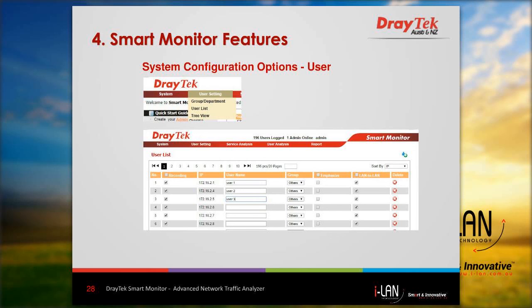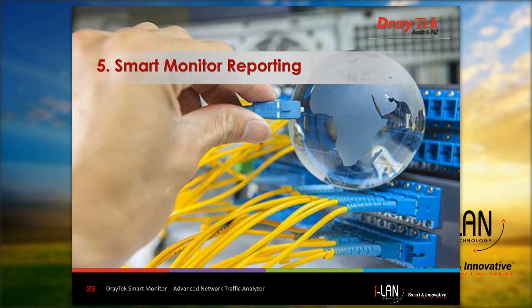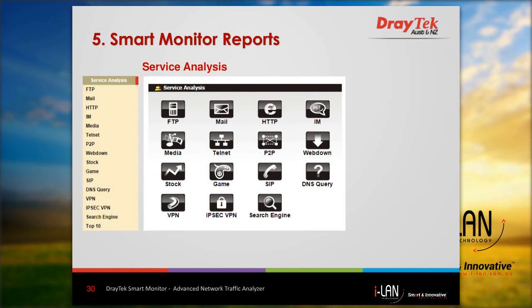The remaining menu bar options are used to view network usage reports: service analysis, user analysis, and reports. I'll now go through some of the reports generated by Smart Monitor to give you an idea of the level of detail that can be captured. The first is the service analysis, which is similar to the service analysis icons shown earlier.